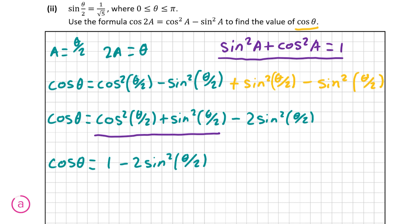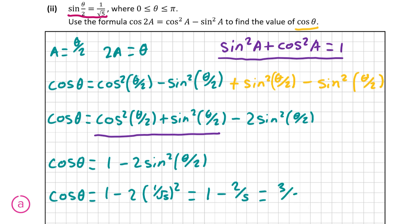We know that sine of theta over 2 is equal to 1 over root 5. Substituting this in, cosine theta equals 1 minus 2 times (1 over root 5) squared, which equals 1 minus 2 over 5, which finally equals 3 over 5. This is our final answer for cosine theta, giving us the full 10 marks for this part.